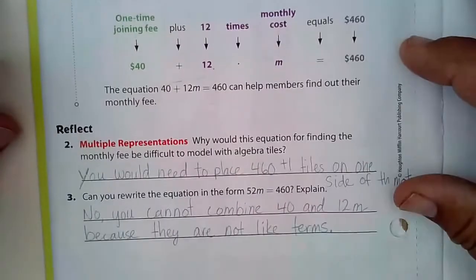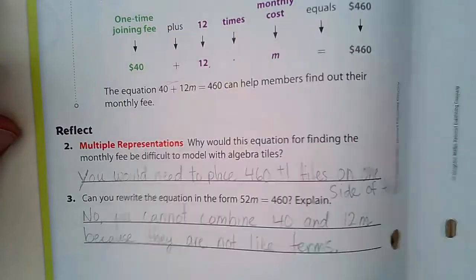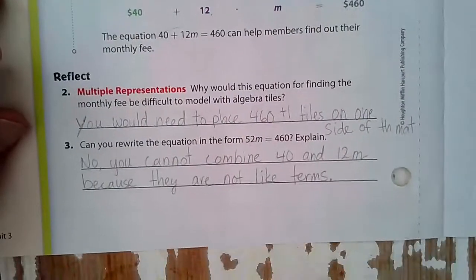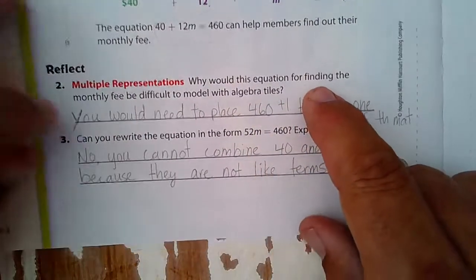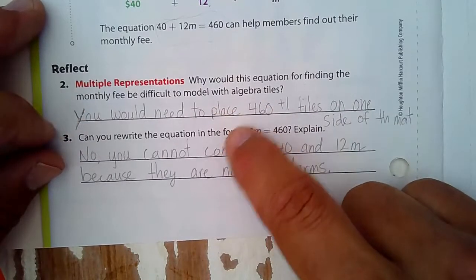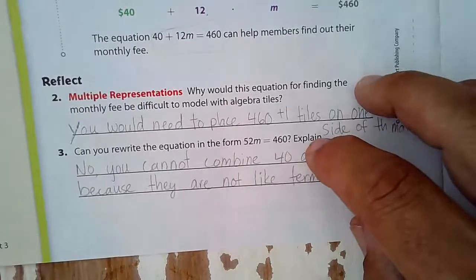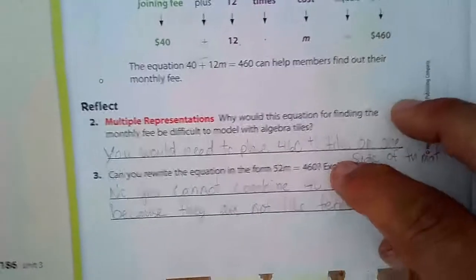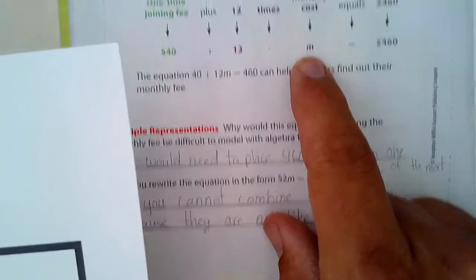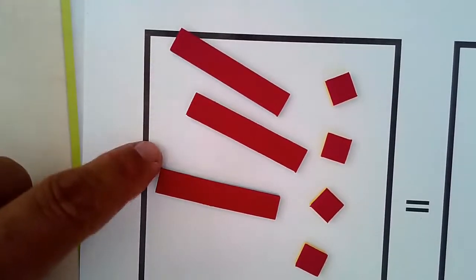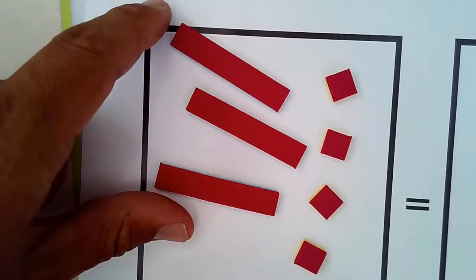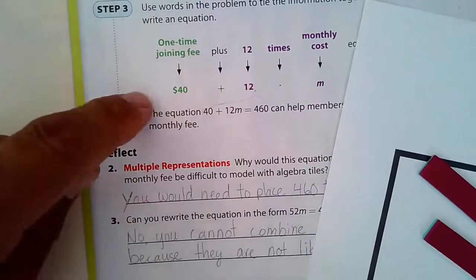So let's reflect. Other representations. Why would this equation for finding the monthly fee be difficult to model with algebra tiles? Well, think about this. As I have my algebra tiles, I have 12M. That means I'd have to have 12 of these. That's not such a big deal.